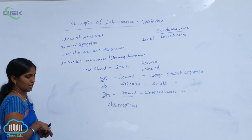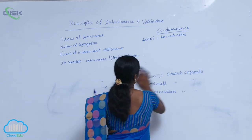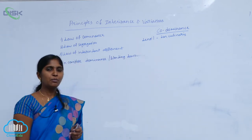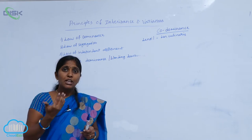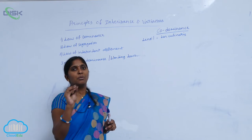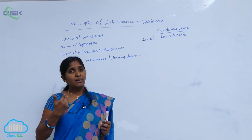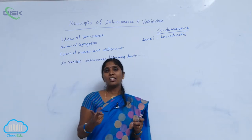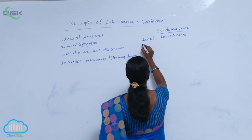That is incomplete dominance. But the law of dominance also varies in co-dominance. What is co-dominance? In co-dominance, the F1 progeny do not show one of the parental characters — but it shows both parental characters fully. In incomplete dominance, blending characters of the parents appear, but in co-dominance, both parental characters appear fully. The best example is lentil.